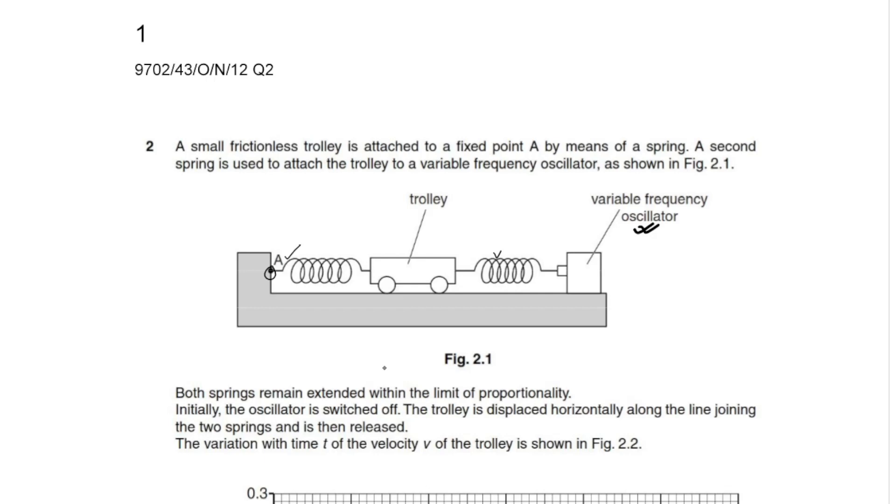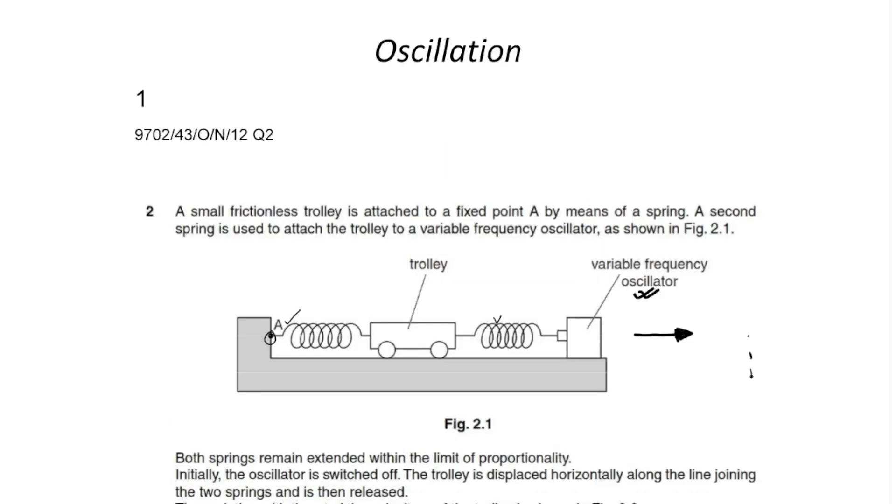Initially, the oscillator is switched off, meaning that the trolley is not moving when t equals 0. The trolley is displaced horizontally along the line joining the two springs and is then released. The spring is first pulled towards this side and then released. The object starts at a point of maximum displacement from the equilibrium.